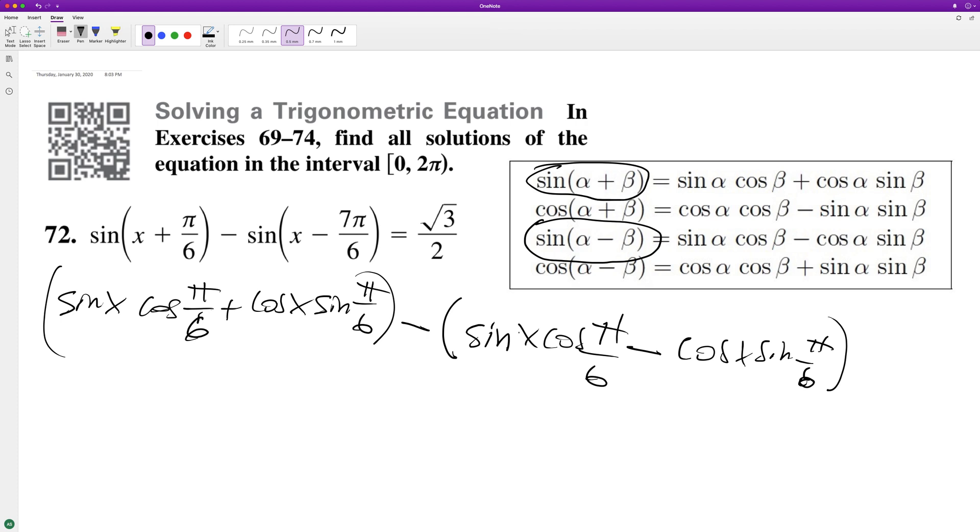So we get root 3 over 2 sine of x plus 1 half cosine of x minus, we're distributing the minus sign here, minus root 3 over 2 sine of x.